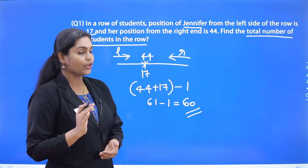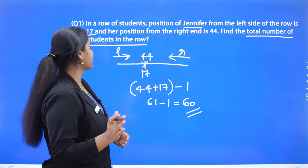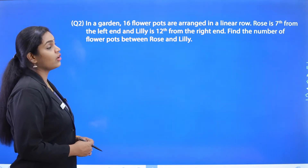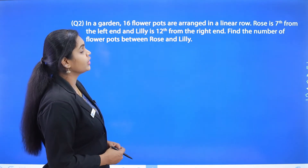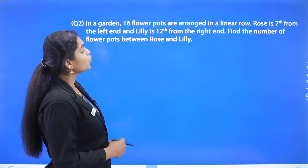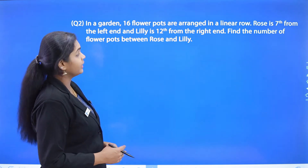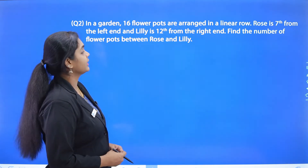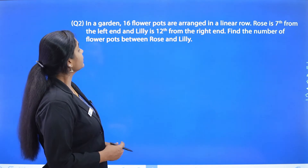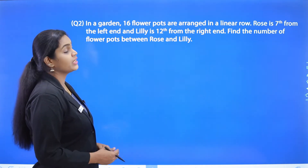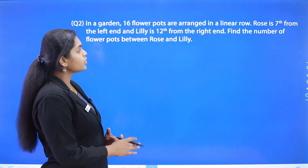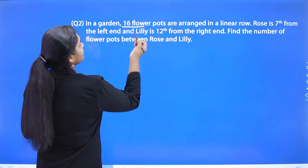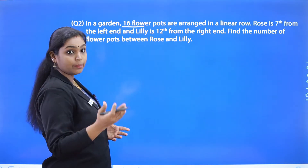Next question: In a garden, 16 flower pots are arranged in a linear row. Rose is 7th from the left end and Lily is 12th from the right end. Find the number of flower pots between Rose and Lily. Here, the total number of flower pots is given, and the positions of two flower pots are given — one from the left end and the other from the right end.